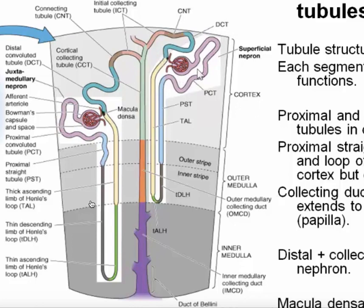There's this anatomic arrangement I want to point out: every ascending limb of the loop of Henle comes back and makes contact with the afferent arteriole that supplies its tubule. That contact point in the tubule involves a very specialized type of epithelial cell called the macula densa. It's an area of communication between the tubule and its blood vessel supply, and it allows the tubule to communicate with its own blood vessel.